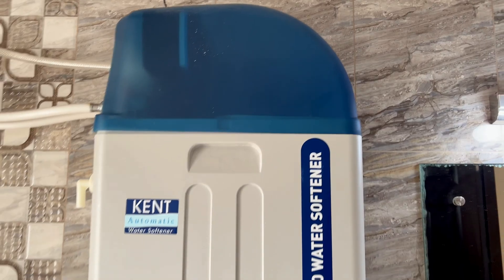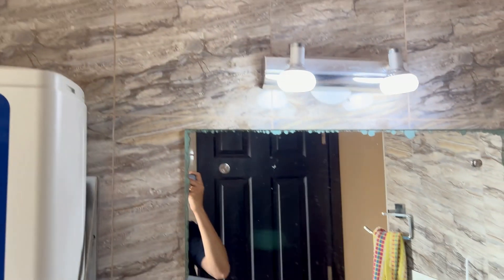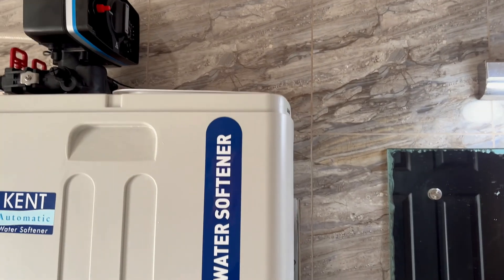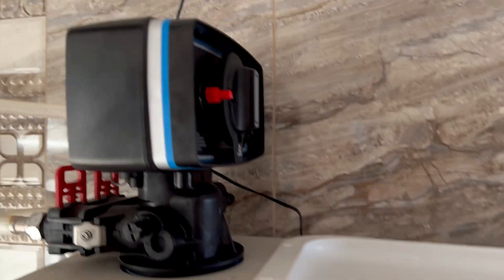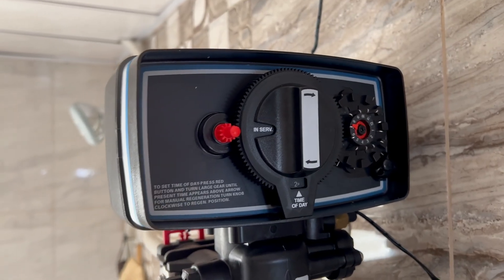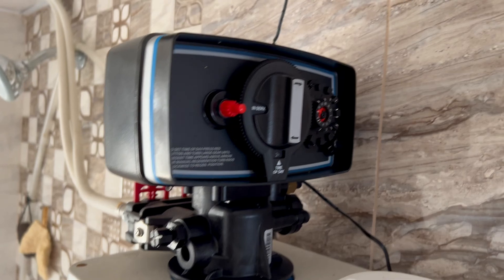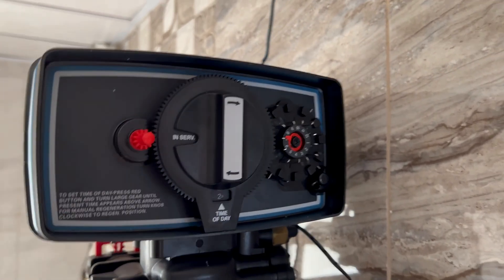The machine comes with the outer body and the upper shell. The shell has to be removed if you want to change the settings of the softener as well as add salt for the softener at regular intervals. Once you open the lid you will find the electrical component here which actually enables the automatic regeneration for this machine.